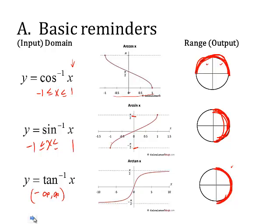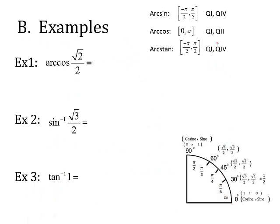To summarize: for arc sine, we can only pick from quadrants 1 and 4. For arc cosine, we can only pick from quadrants 1 and 2. For arc tangent, we can pick from quadrants 1 and 4. I expect you to draw these little circles on each question to narrow down your possible answers.